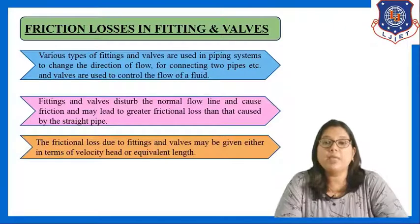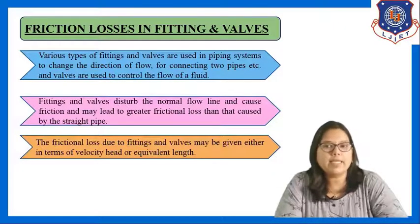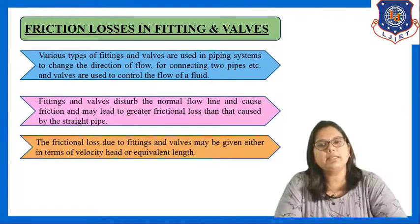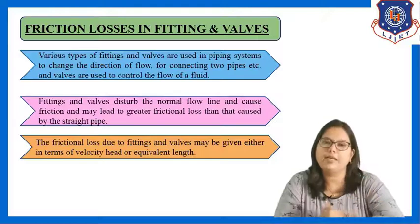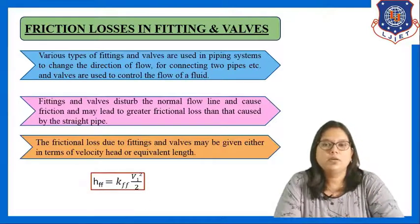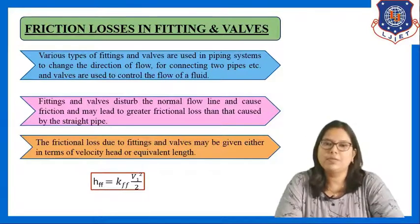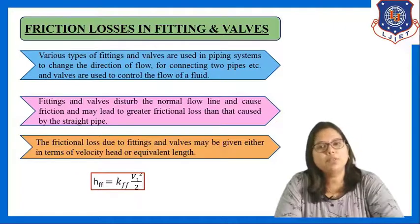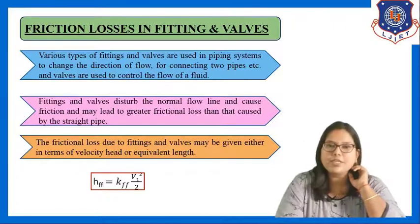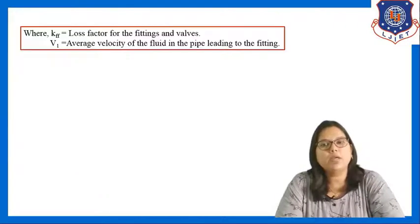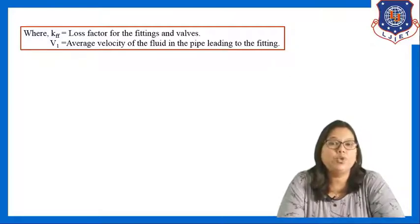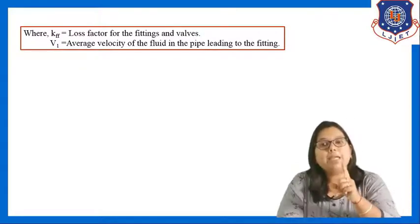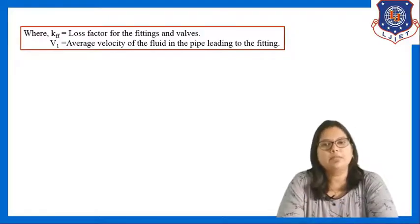The friction losses due to fittings and valves may be expressed either in terms of velocity head or in terms of equivalent length. HFF, which is the friction loss due to fittings and valves, is equal to KFF·V1²/2. This equation is similar to sudden expansion and contraction. KFF is the loss factor for fittings and valves, and V1 is the average velocity of the fluid in the pipe leading to the fitting.